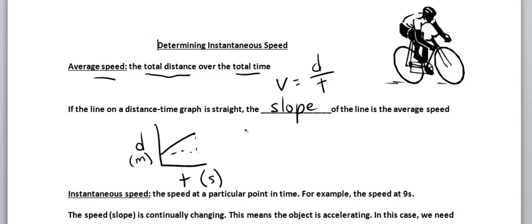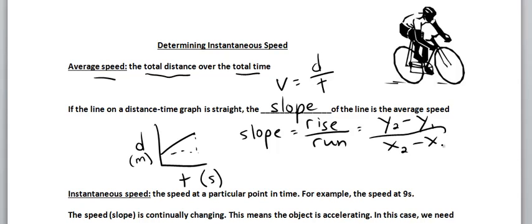So the slope of this, remember slope is rise over run. Another way to say rise is y2 minus y1, and the run is x2 minus x1.